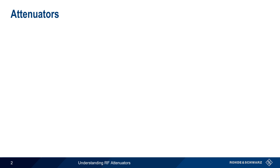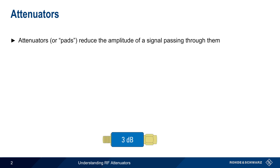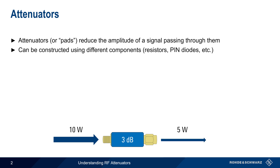Attenuators, also often referred to as pads, are devices which reduce the amplitude of a signal passing through them. There are many different ways to construct attenuators, the most common being carbon resistors, but other devices such as pin diodes are used in some implementations.